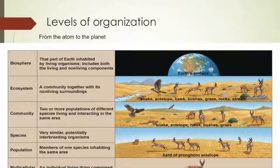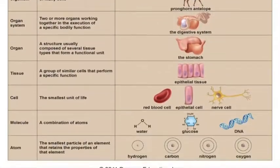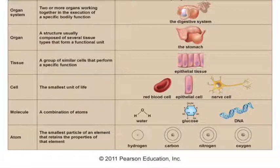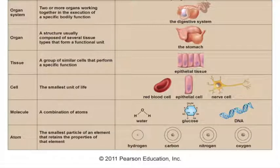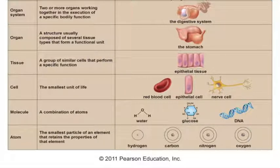After these experiments, let's discuss levels of organization on our planet. This is a logical order in which we organize everything on the surface of the Earth. We begin with the atom — the smallest particle of an element that retains the properties of that element. Atoms are not considered to be alive; they are just small portions of matter. Some examples are hydrogen, carbon, nitrogen, and oxygen — all of these were created in the Big Bang. When atoms get together, they form molecules, such as water, glucose or sugar, and DNA.